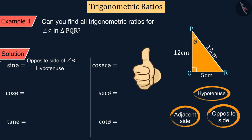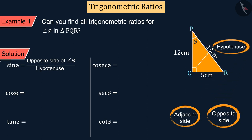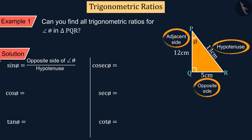Very good! The side in front of right angle is hypotenuse PQ. The side in front of angle phi is opposite side QR and the remaining side PR is the adjacent side.